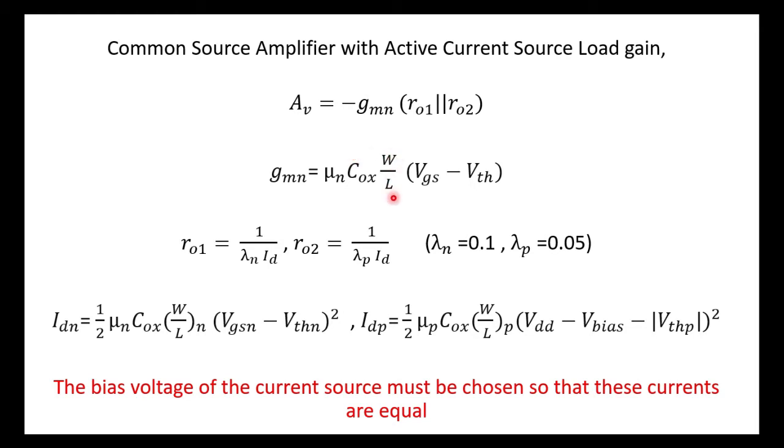And we have the equations for ro1 and ro2: 1/(λn × Id) and 1/(λp × Id). We have to fix this λn and λp, and there is a parameter called lambda in the level 1 parameters of MOSFET model. We are going to use that parameter and set it to 0.1 and 0.05 in LTSpice.